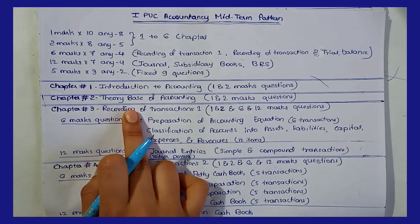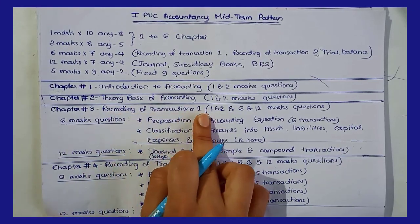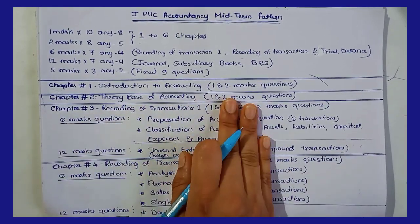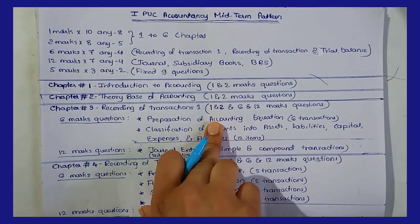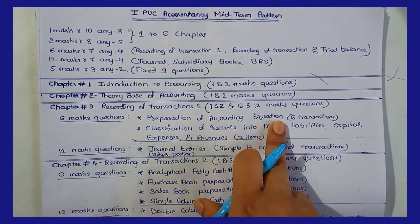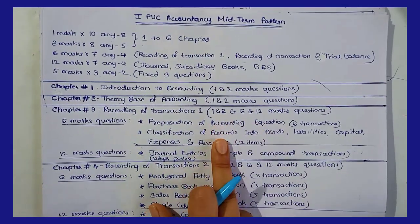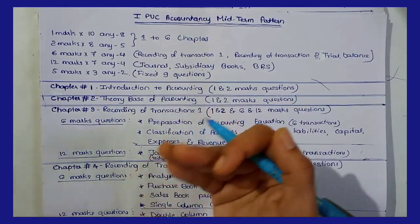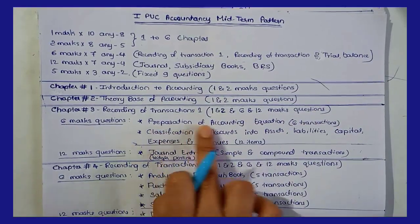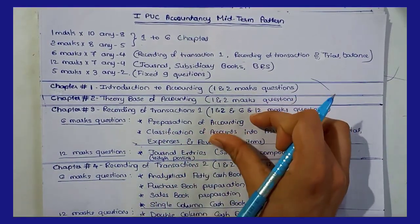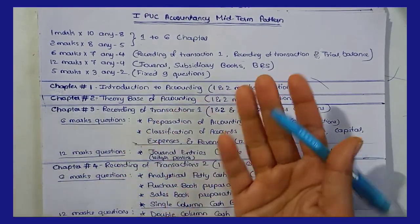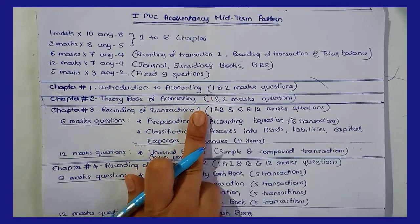This is the third chapter — Recording of Transaction 1. In this section, there are 1 and 2 mark questions, 6 mark questions, and 12 mark questions. The first question is Preparation of Accounting Equation. Accounting Equation: Assets = Liabilities + Capital. I have already made a video on this.